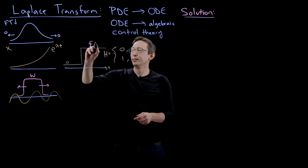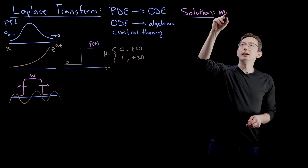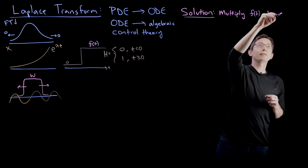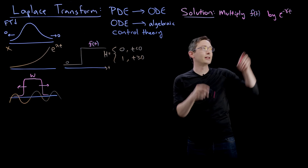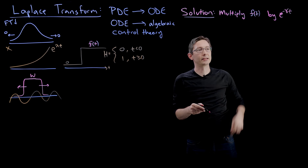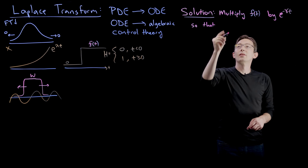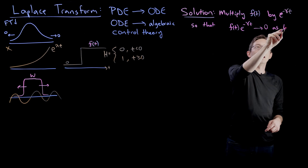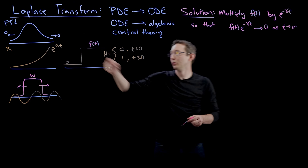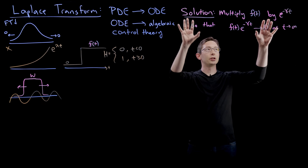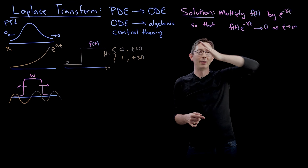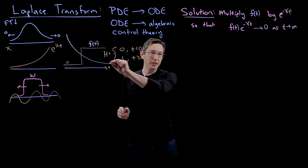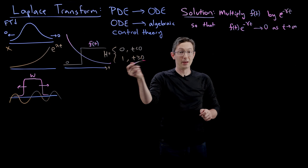The solution is to take our little functions f of t and multiply f of t by some very stable e to the minus gamma t — that's a decaying exponential — so that f of t times e to the minus gamma t goes to zero as t goes to positive infinity. So we're going to take our badly behaved function f and multiply it by a decaying exponential, so that when those multiply together it will go to zero as t goes to positive infinity.